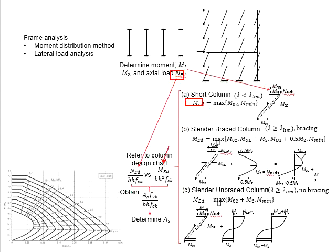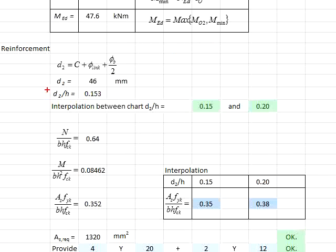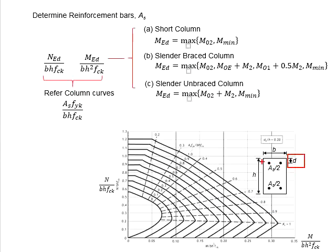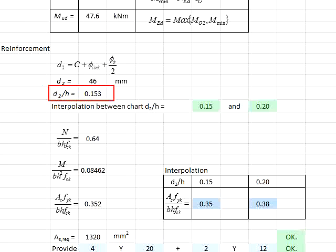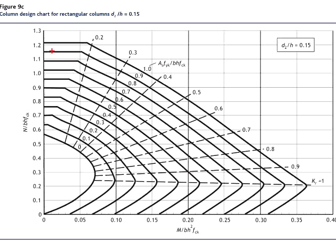Now that you have obtained MED with the given N_ED, substitute both values into the equations. This represents the y-axis of the chart while this represents the x-axis. Before that, you need to determine which chart to use. First, determine the d2 per h ratio, where d2 is determined by the concrete cover plus the size of the link plus the diameter of the bar divided by 2. This determines the position of the reinforcement bar from the top of the column. The d per h ratio is 0.153. Refer to the chart for d per h ratio of 0.15.